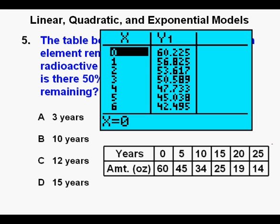We go to the table view by pressing 2nd, then GRAPH. We're looking for half of this initial amount, 60 ounces, and that will be 30 ounces.